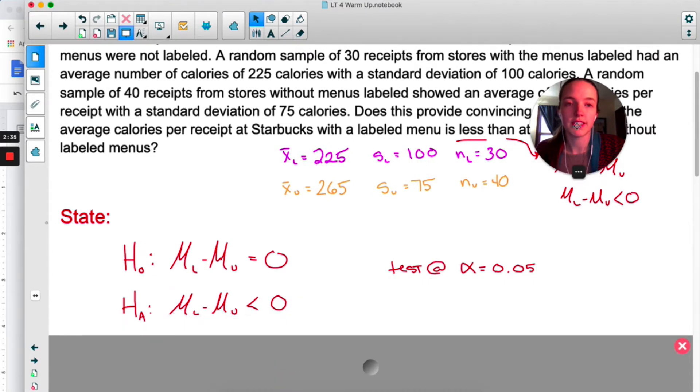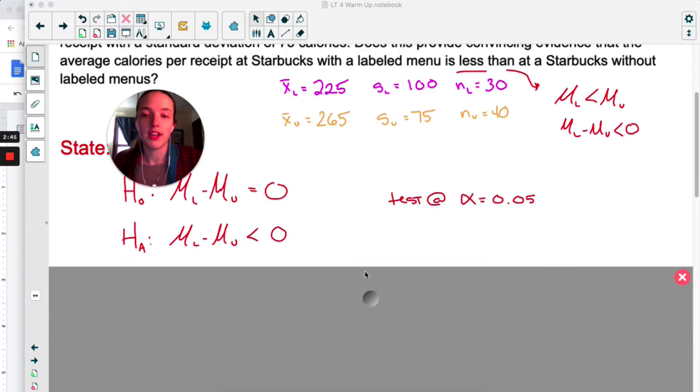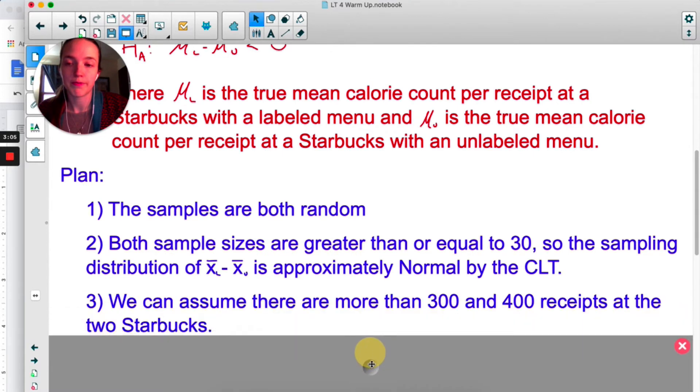In our state step, the null is that everything's normal—there's no difference between the two restaurants: μ_l minus μ_u equals zero. And we are curious if that difference is actually less than zero. Of course we need to state what those are, so where μ_l is the true mean calorie count per receipt at a Starbucks with the labeled menu. Exact same for μ_u. And then we're going to test at 0.05.